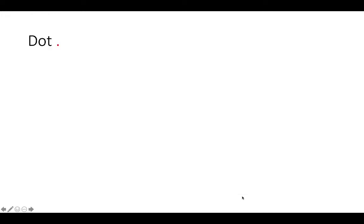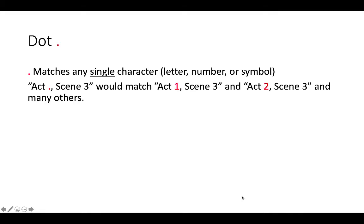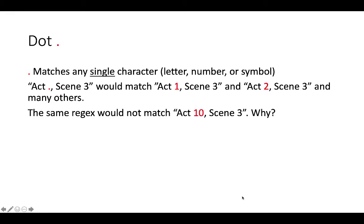First is the dot. A dot matches any single character — that character can be either a letter, a number, or even a symbol. For example, 'act.scene3' will match 'act1,scene3' and 'act2,scene3' and many others. The same regex, however, will not match 'act10,scene3' or 'act11,scene3'. That is because the dot represents any single character and we only specified one, not two, so it wouldn't match any two-digit number.